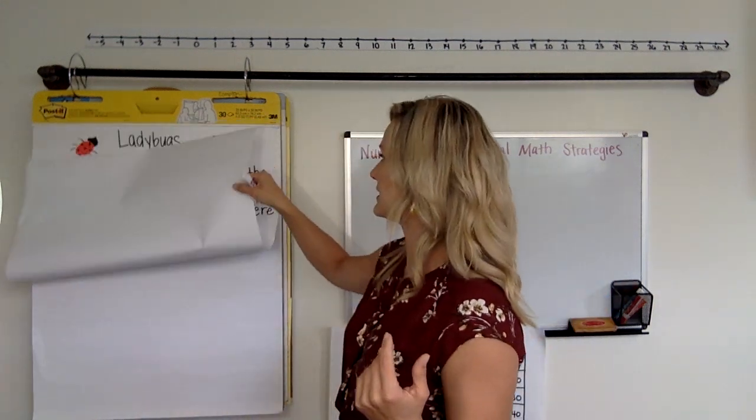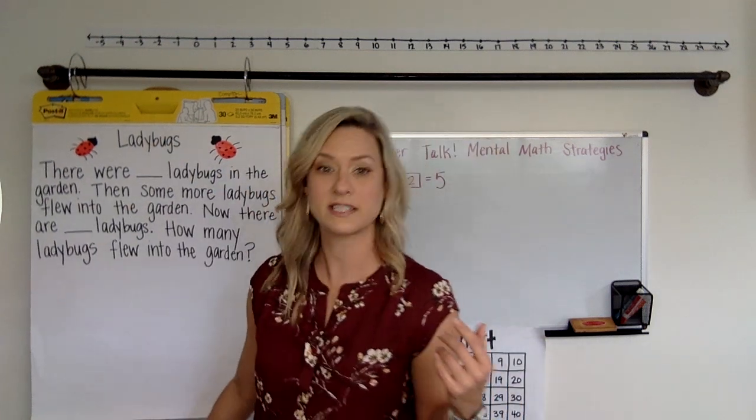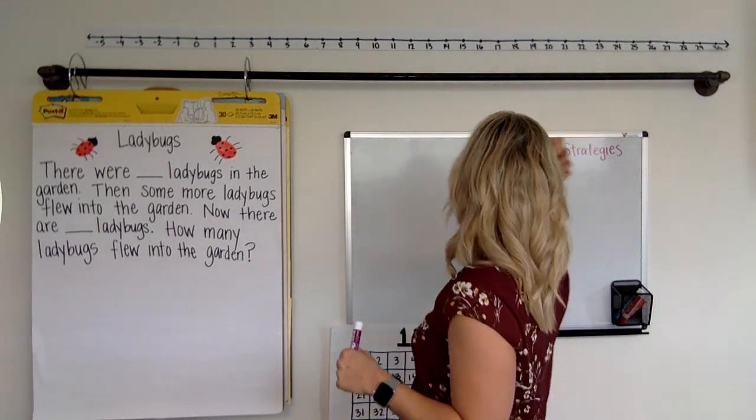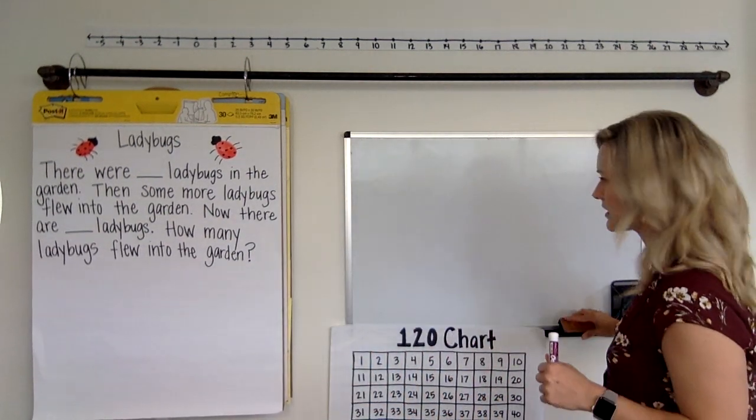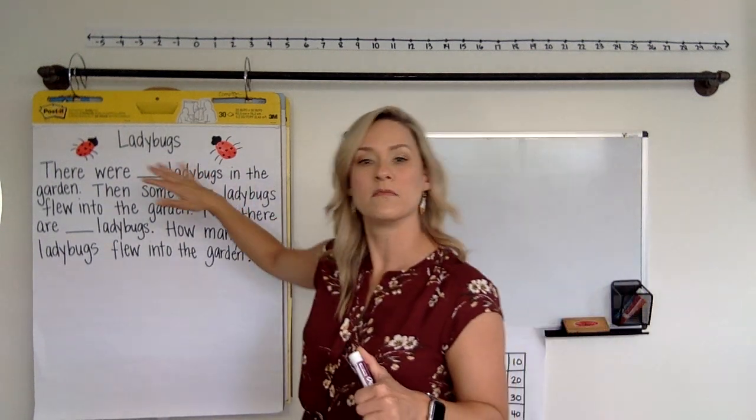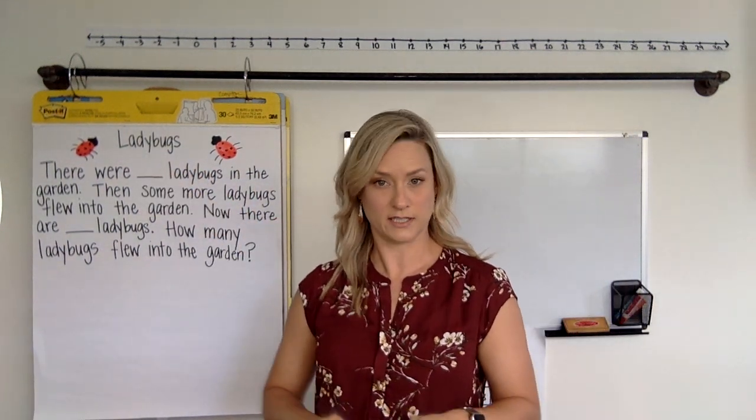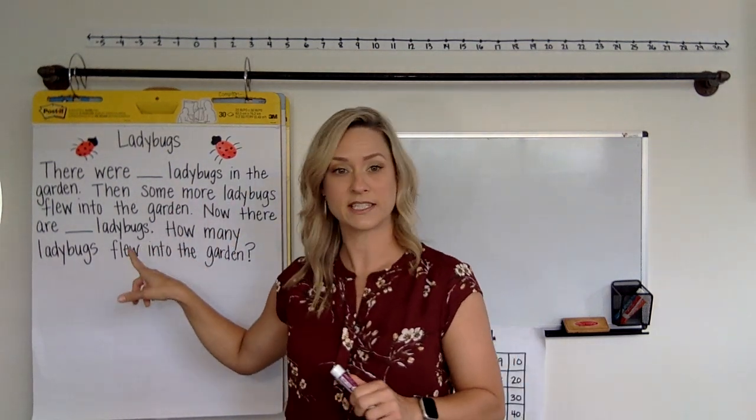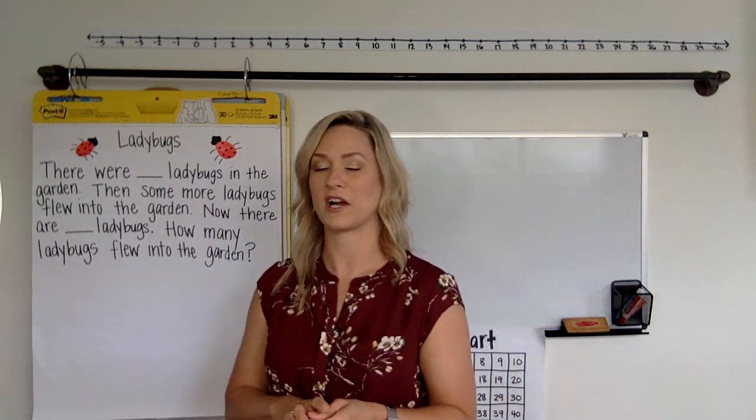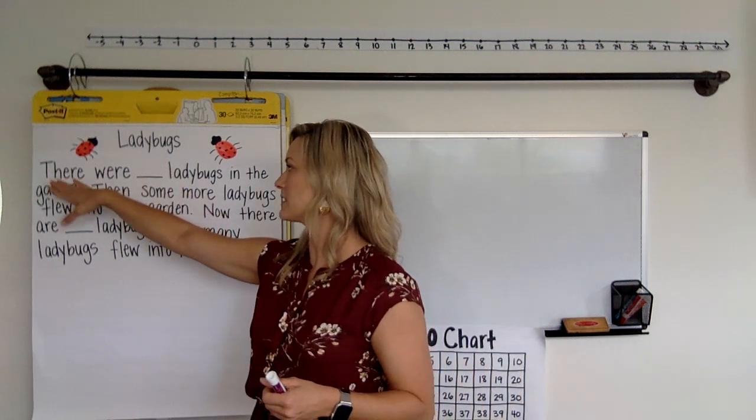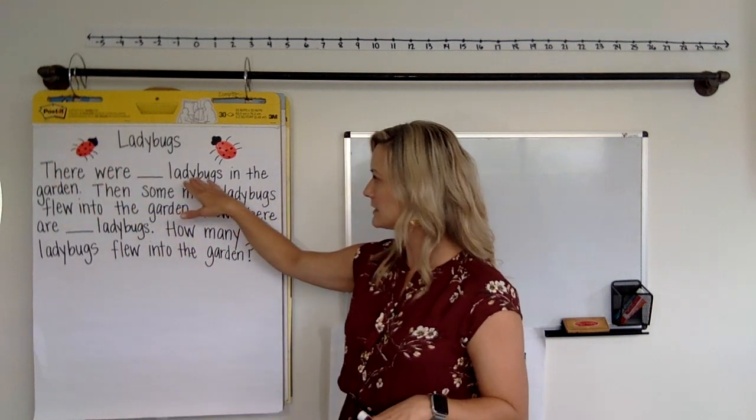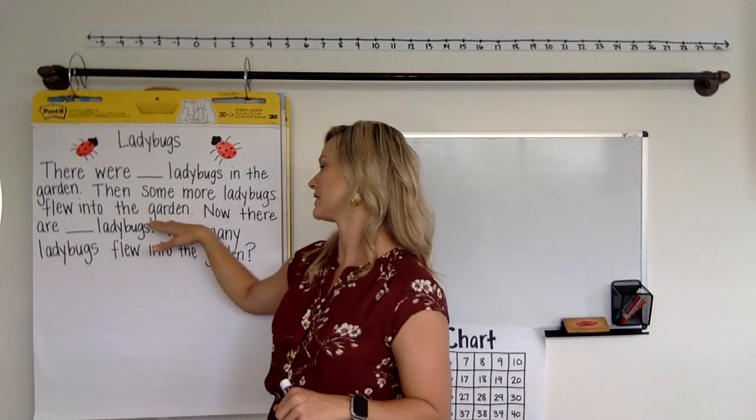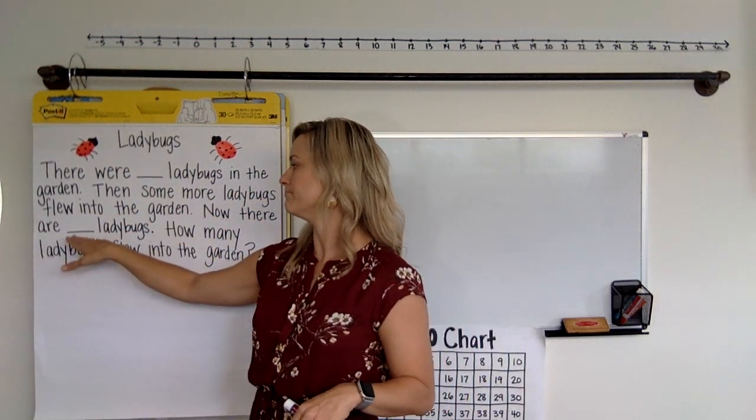So our story today is all about ladybugs because it's springtime, finally. So we're outside, we're hanging out, and there are butterflies, there are ladybugs. My yard is going crazy out there. So here is the story problem I'm going to work on with your child in a little while. Notice that there are no numbers in there yet. I will fill those in later. You'll see how we do that. All right, so the story is ladybugs. There were hmm ladybugs in the garden. Then some more ladybugs flew into the garden. Now there are hmm ladybugs. How many ladybugs flew into the garden?